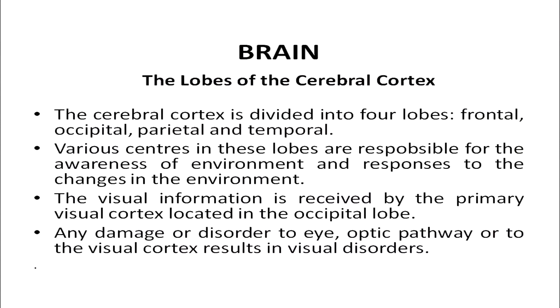There are different lobes of the cerebral cortex. The cerebral cortex is divided into four lobes: the frontal lobe, the occipital lobe, the parietal lobe, and the temporal lobe. Various centers in these lobes are responsible for awareness of the environment and responses to changes in it. Visual information is received by the primary visual cortex, located in the occipital lobe. Any damage to the eye, the optic pathway, or to the visual cortex results in visual disorders.